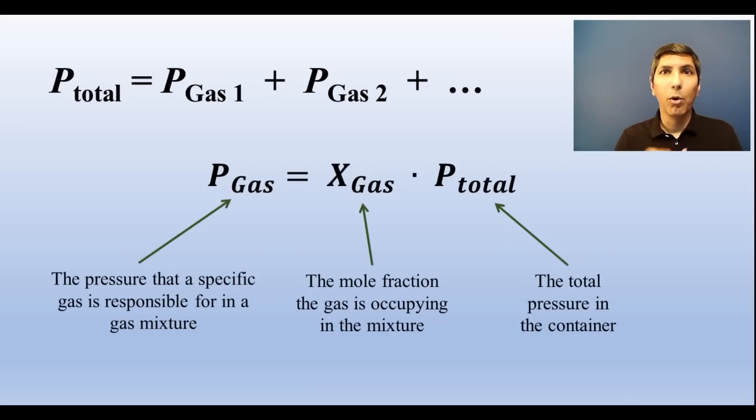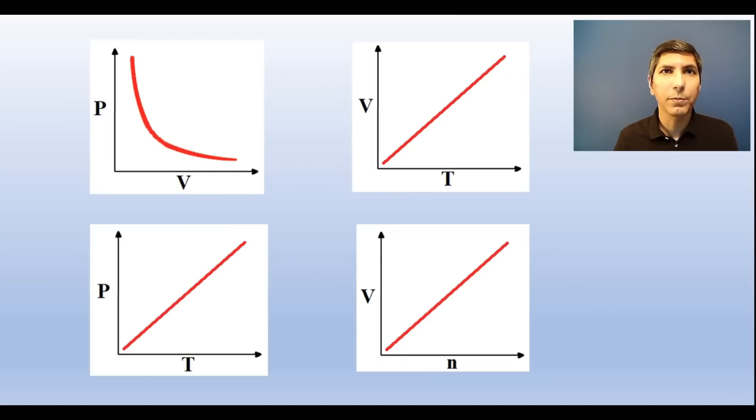When there is a mixture of gases, the partial pressures of the individual gases add up to the total pressure in the container. And to determine the partial pressure of any one gas, just multiply the mole fraction that gas occupies in the container by the total pressure. Also, be able to recognize the graphical relationships between pressure, volume, temperature, and number of moles of gas. Those graphs look a lot like this.